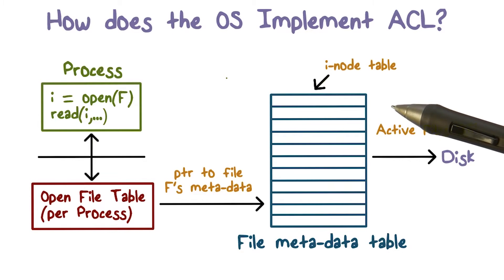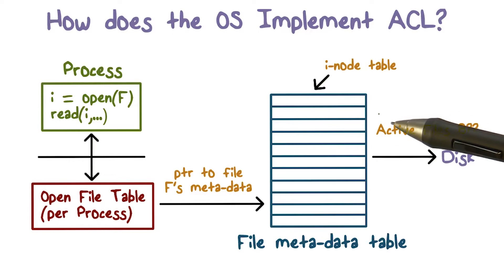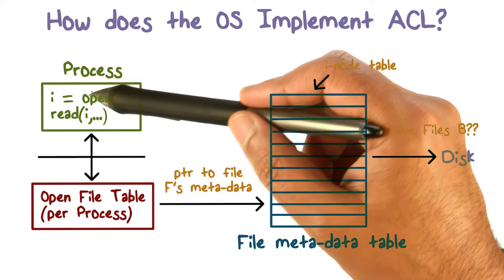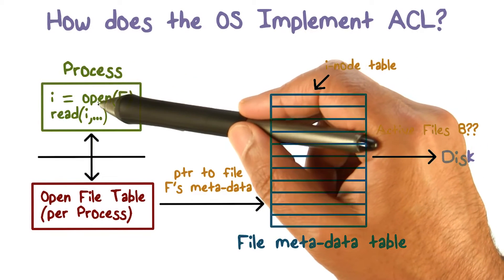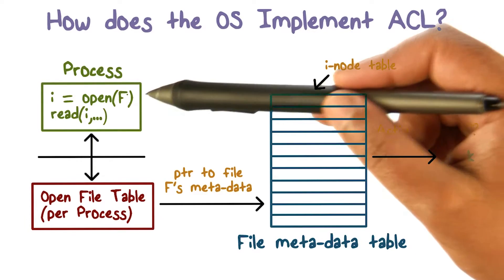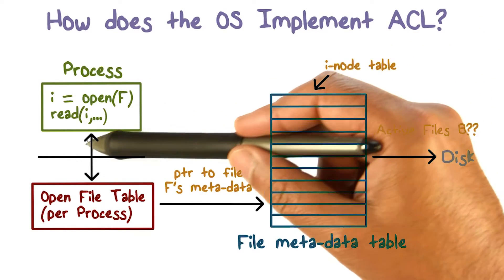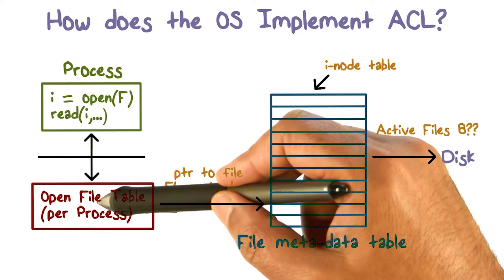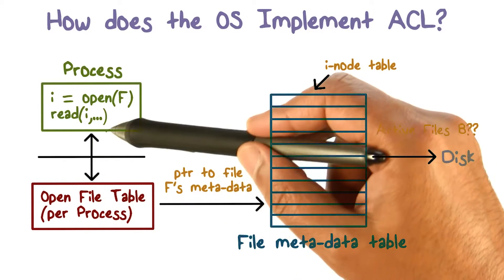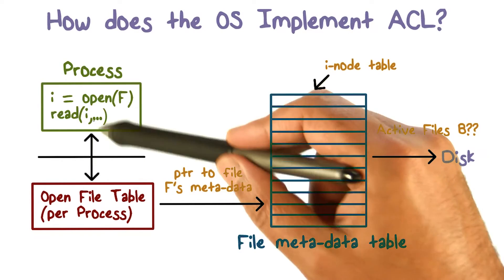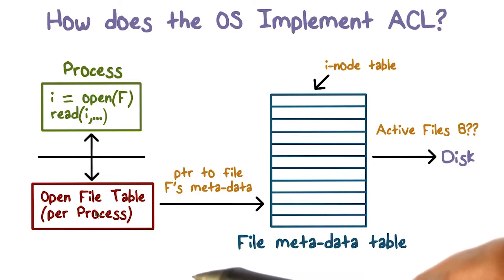I want to talk a little bit more about what happens when you open a file and how access control factors into it. So a process is making these calls — it first opens this file f, not specifying the mode here, but maybe this is read. This line is going from user to the operating system — a system call — this is the boundary between the two. This side is untrusted, this side is trusted.